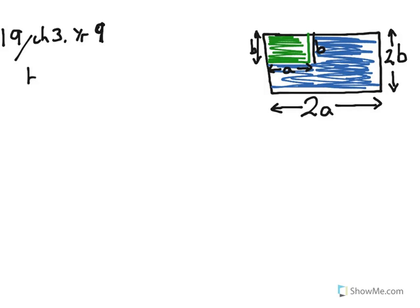Well, we know that the area of the blue must be the area of the whole rectangle, so here's our formula, minus the green area.